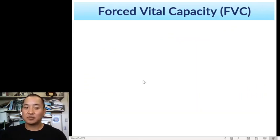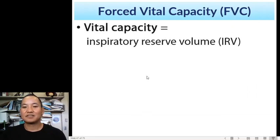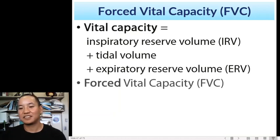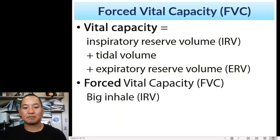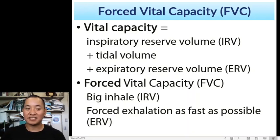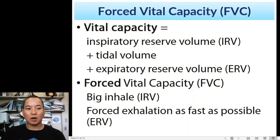So how does this relate to spirometry? We have something called forced vital capacity. Vital capacity is your tidal volume plus expiratory reserve — your IRV plus tidal volume plus ERV. For forced vital capacity, you take a big inhale and then do a forced exhalation — not just trying to blow out as much air as possible, but also as fast as you can. It's not a gradual exhale; it's a forced, fast exhalation.